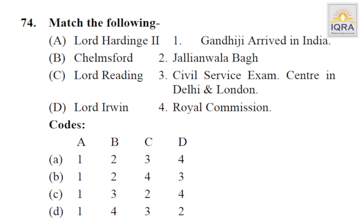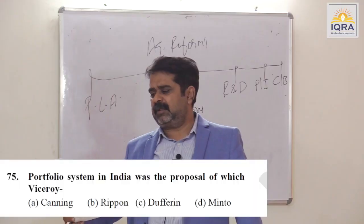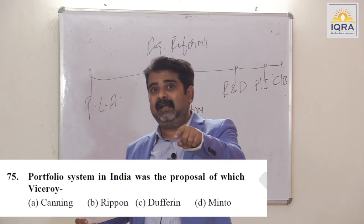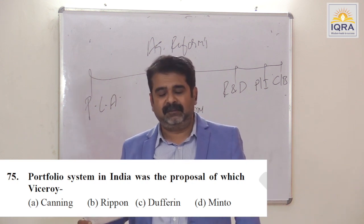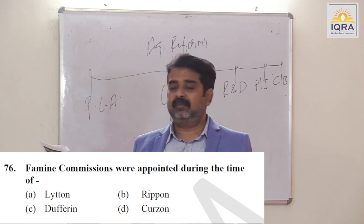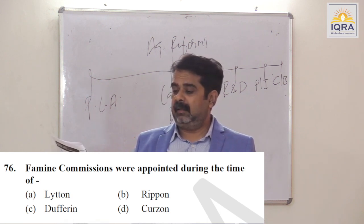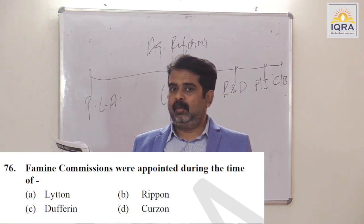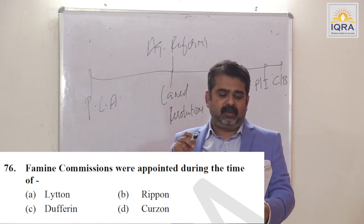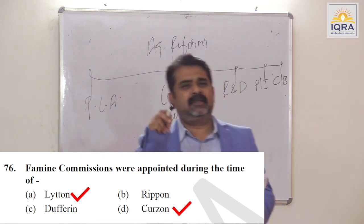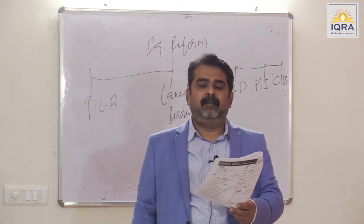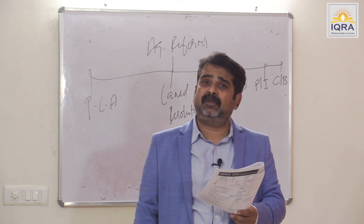Portfolio system in India was proposed by which Viceroy? Canning — finance minister, home minister, defence minister — but it was included in the Act of 1861. Answer is A. Famine Commissions were appointed during the time of Lytton and Curzon — please do the correction in the question. Macdonald Commission during Curzon; Strachey Commission during Lytton. Answer is corrected.